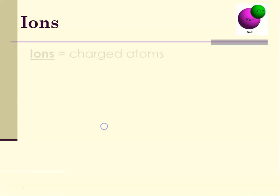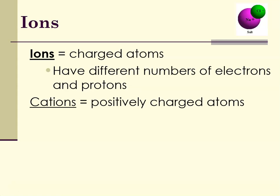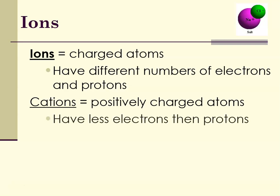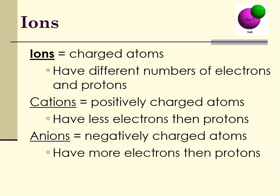Let's talk a little bit about ions. Ions are charged atoms. Why are they charged? They have different numbers of electrons and protons. When you have the same number of protons and electrons, you're neutral. When you have different numbers, you're either positive or negative. Remember, protons don't go anywhere — they're in the nucleus. Electrons can come and go. Cations are positively charged because they have fewer electrons than protons — they've lost electrons. Anions are negatively charged because they have gained electrons, so they have more electrons than protons.